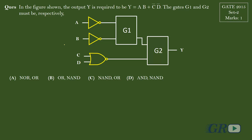This question was asked for one mark in GATE 2015. We have been given a digital circuit with two unknown gates G1 and G2, and we are required to get the output Y equals AB plus C-bar D-bar. We need to identify the values of these two gates G1 and G2.